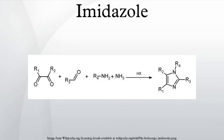Imidazole is a planar five-membered ring. It exists in two equivalent tautomeric forms, because the proton can be located on either of the two nitrogen atoms. Imidazole is a highly polar compound, as evidenced by a calculated dipole of 3.61 D. It is highly soluble in water. The compound is classified as aromatic due to the presence of a sextet of pi electrons, consisting of a pair of electrons from the protonated nitrogen atom and one from each of the remaining four atoms of the ring.